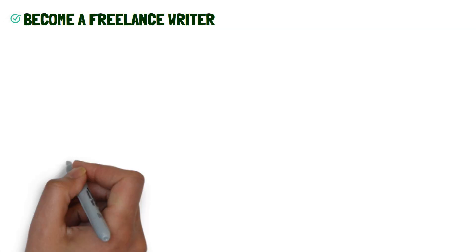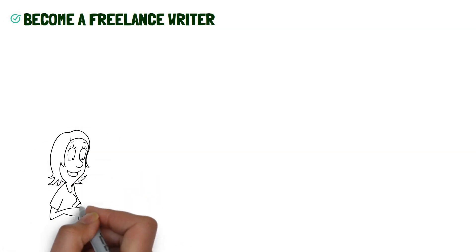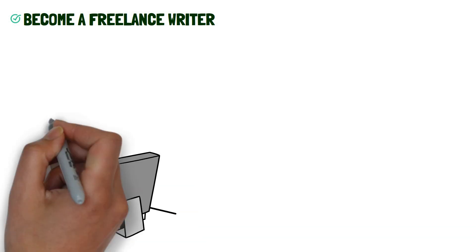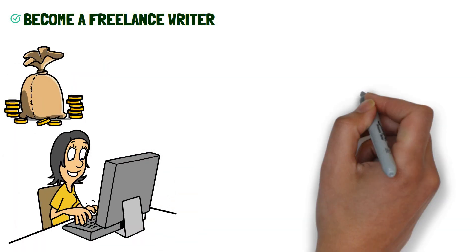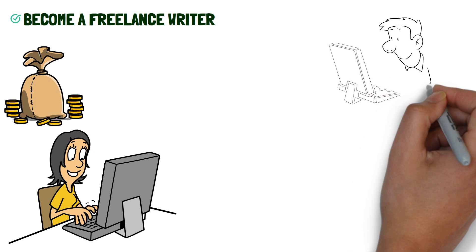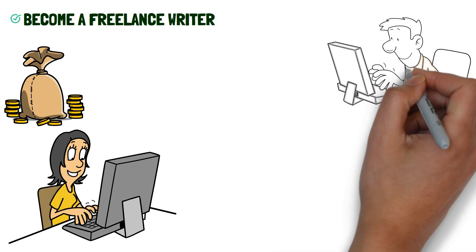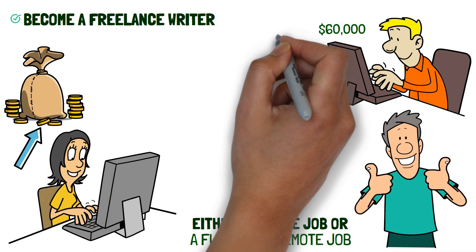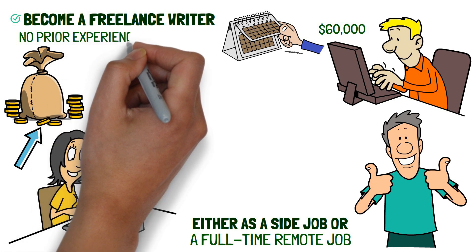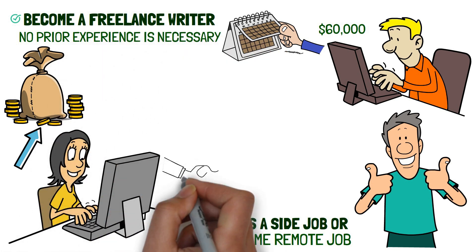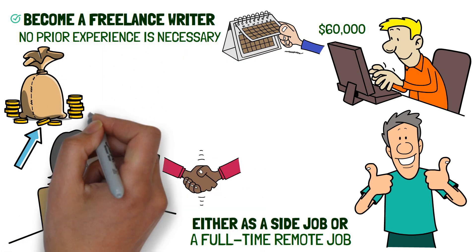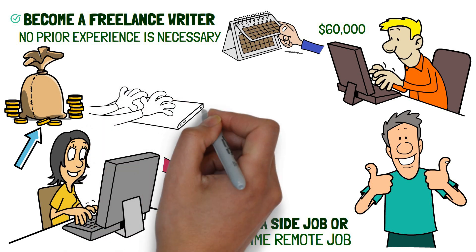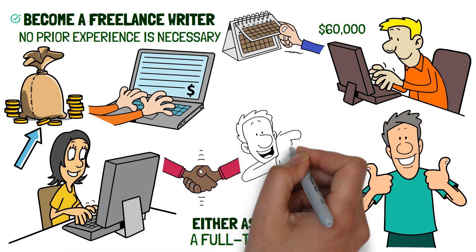Number 5: Become a Freelance Writer. For those with a knack for writing, becoming a freelance writer is one of the best ways to make money online. Writers can make an average of around $60,000 per year from content writing, either as a side job or a full-time remote job. This is a great way to make money on your own schedule, and no prior experience is necessary. With some training and a bit of dedication, you might be able to make a steady income writing online.